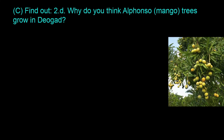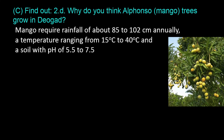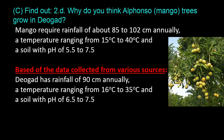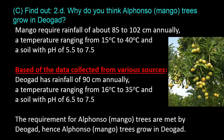Question C, Find Out, 2D: Why do you think Alfonso mango trees grow in Devjad? Mango requires rainfall of about 85 to 102 centimeters annually, a temperature ranging from 15 to 40 degrees Celsius, and a soil with pH of 5.5 to 7.5. Devjad has rainfall of 90 centimeters annually, a temperature ranging from 16 to 35 degrees Celsius, and a soil with pH of 6.5 to 7.5. The requirements for Alfonso mango trees are met by Devjad, hence Alfonso mango trees grow in Devjad.